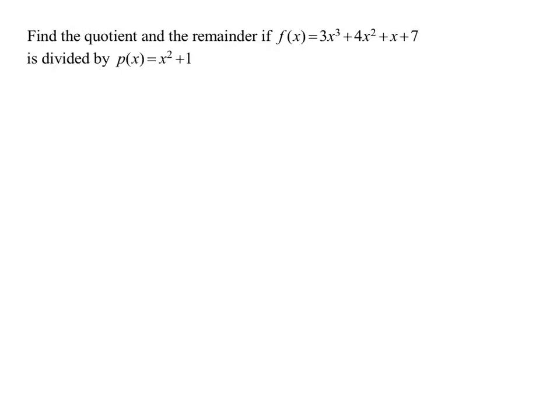First thing before we actually do the division, are there any missing terms? f of x is 3x cubed plus 4x squared plus x plus 7. I have my degree 3, my degree 2, my degree 1, and my constant. No terms are missing.